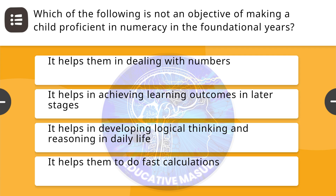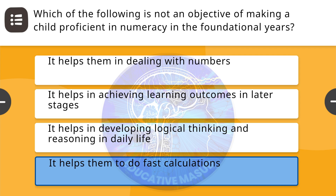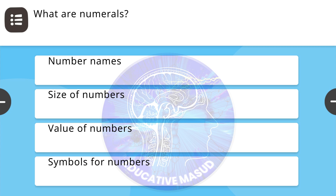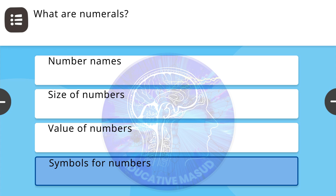Next question: which of the following is not an objective of making a child proficient in numeracy in the foundational years? Correct answer is it helps them to do fast calculations. Next question: what are numerals? Correct answer is symbols for numbers.